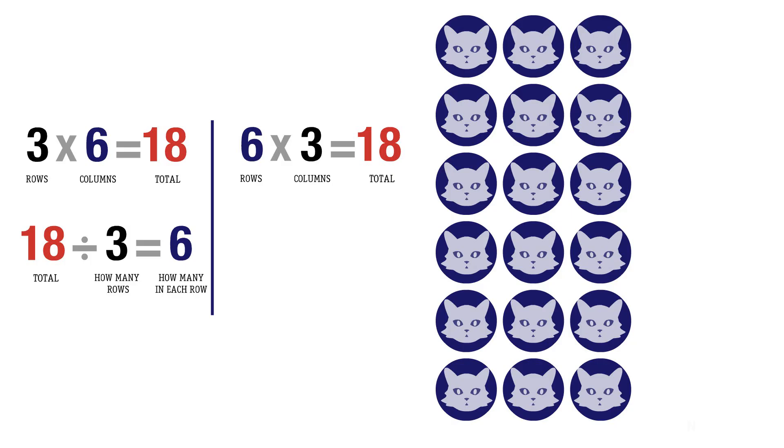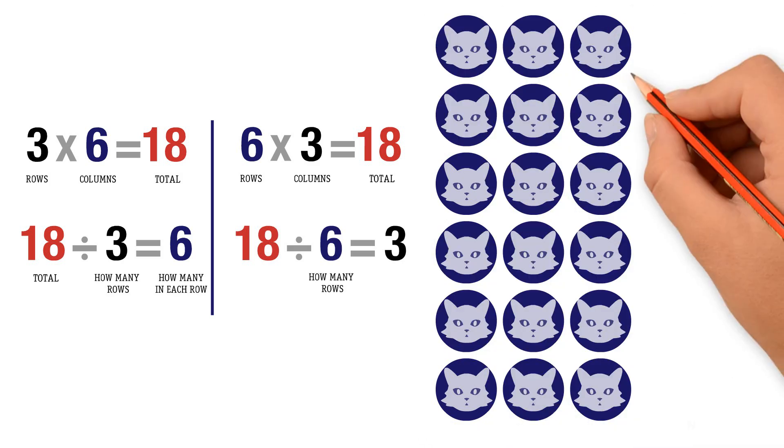Our related division fact also changes. Instead of 18 divided by 3, we have 18 divided by 6 because now we have 6 rows and 3 columns.